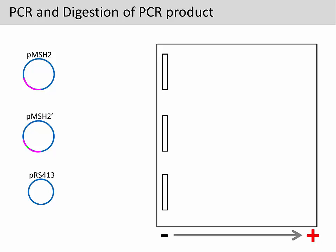In this experiment, we will first amplify a region of the pMSH2 gene using PCR. The two purple arrows indicate the binding sites for the PCR primers. After the PCR, a fragment will be produced for the pMSH2 and the pMSH2 prime plasmid. The empty vector will not produce any PCR product because there is no primer binding site.